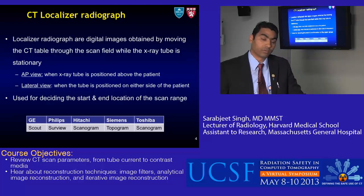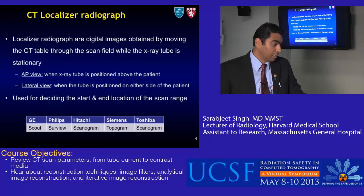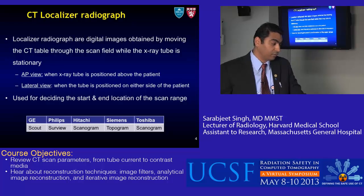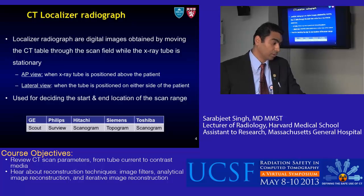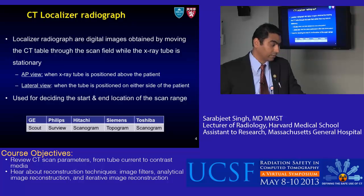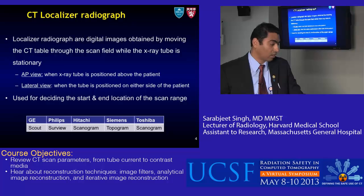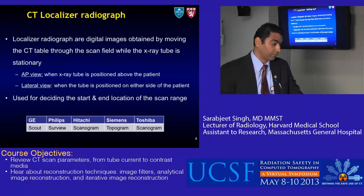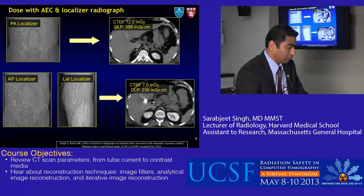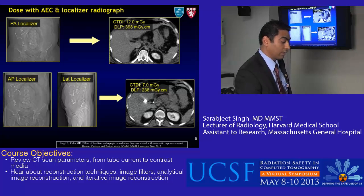Let's start with the CT localizer radiograph. This is a digital image obtained by moving the CT table through the scan field while the x-ray tube is stationary. We have an AP (anterior-posterior) view when the x-ray tube is positioned above the patient, and a lateral view where the tube is positioned on either side of the patient. This localizer is used for deciding the start and end location of the scan range. Different vendors call it by different names: Scout from GE, Surview from Philips, scanogram from Hitachi, topogram from Siemens, and scanogram from Toshiba. Here are examples of a PA localizer, an AP localizer, and a lateral localizer.